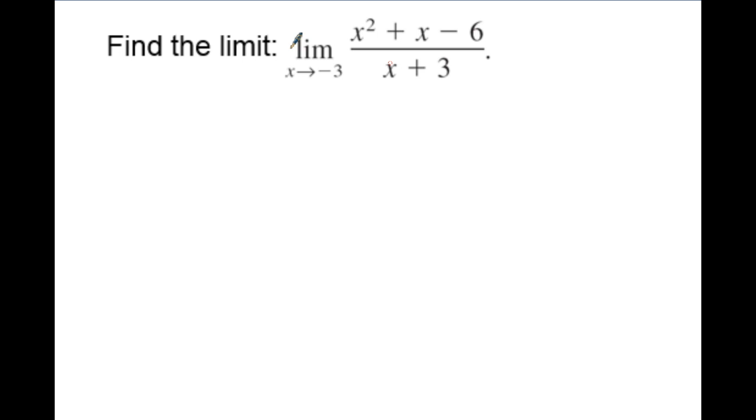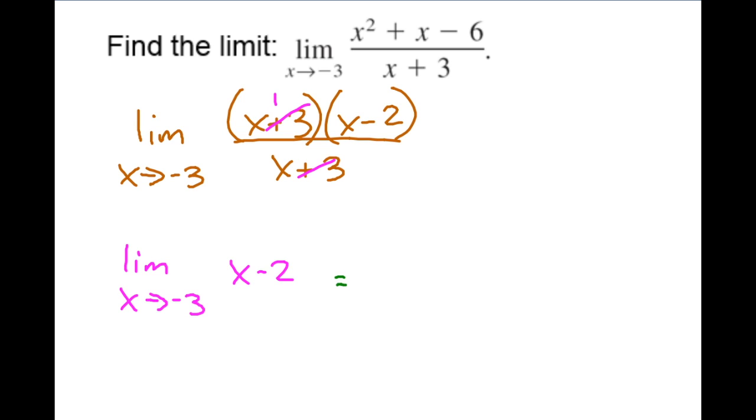So we're going to try to manipulate this so that we can rewrite it as something that is equivalent to it but yet defined at that value of negative 3. So just like you thought, you're going to factor a little bit. In terms of factoring, the numerator obviously is quadratic so it will factor to x plus 3 times x minus 2 over x plus 3. The x plus 3's of course will cancel and then now we have that form that we're looking for.